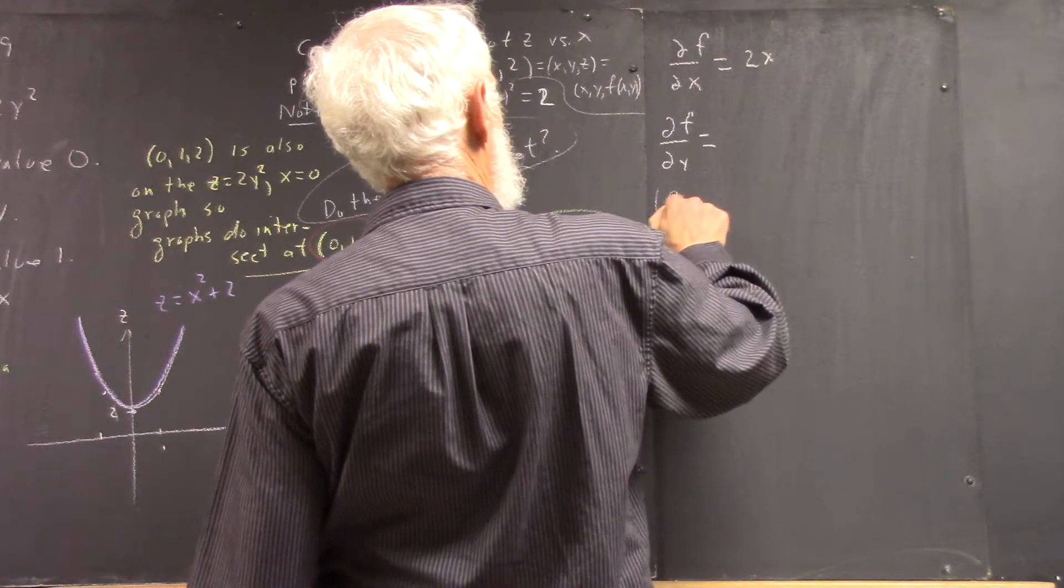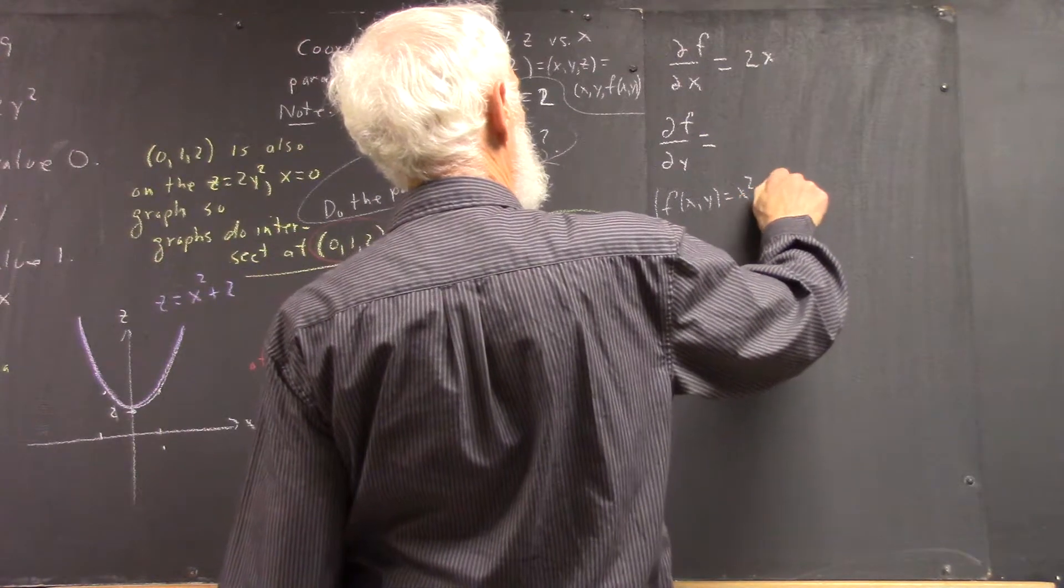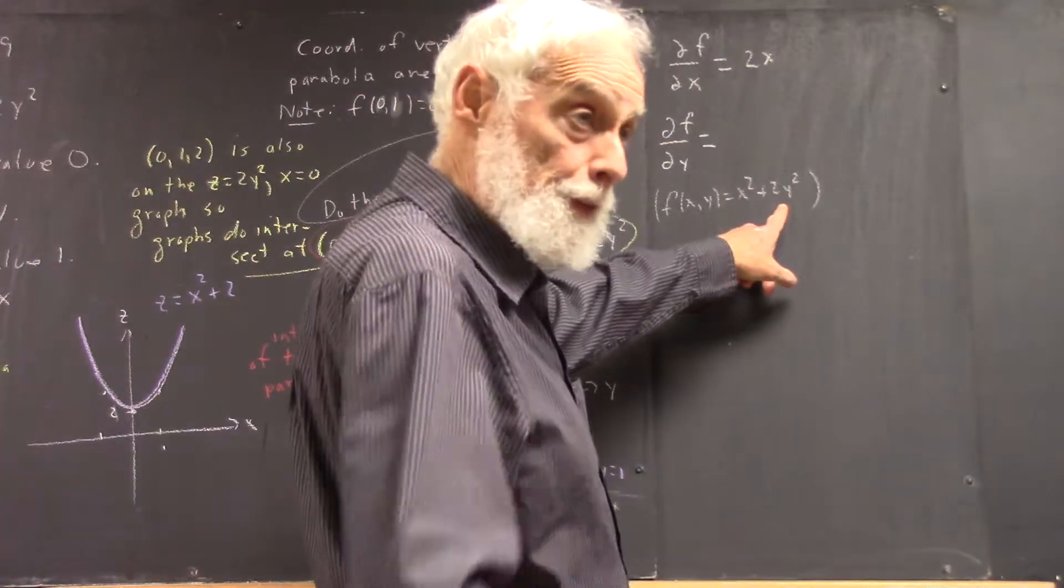just write it down lightly, F(X, Y) = X² + 2Y². If Y is constant, then this is constant and its derivative is 0.